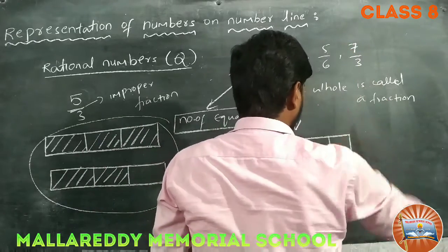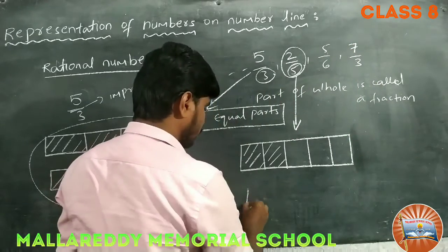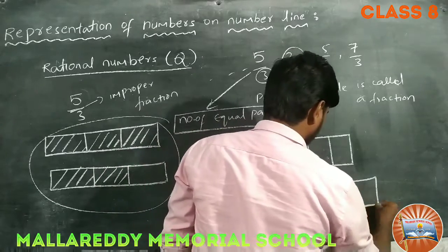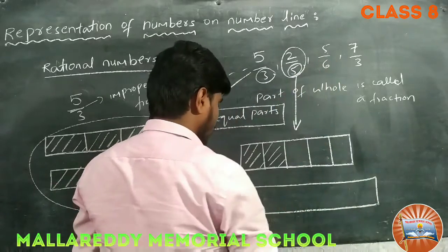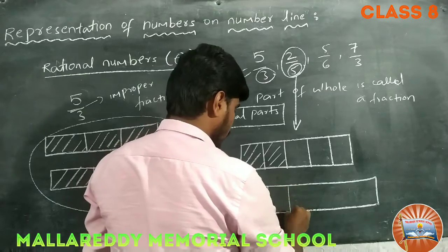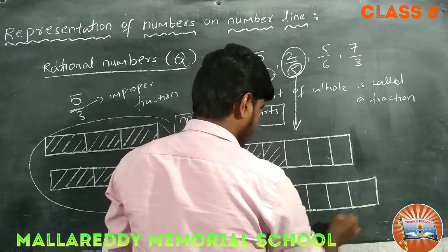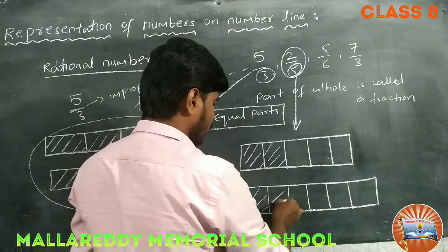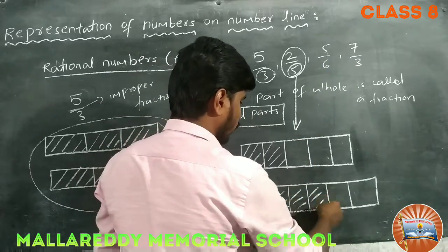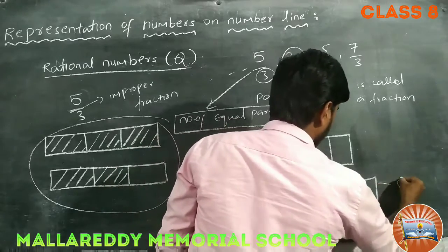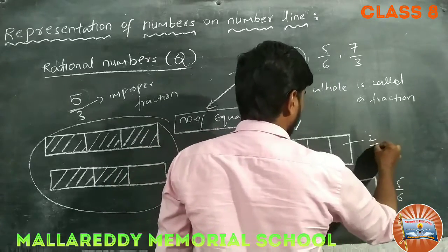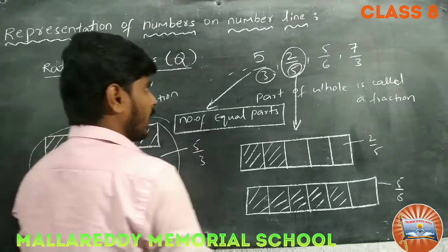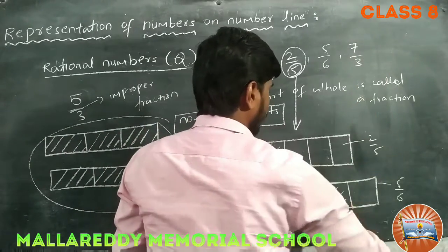Coming to 5 by 6 — it is a whole part in which we have to make 6 equal parts: 1, 2, 3, 4, 5, 6. How many are shaded here? 1, 2, 3, 4, 5 are shaded. This is the 5 by 6 representation. And this one is 2 by 5, this one is 5 by 3, and we can represent 7 by 3 also the same way.